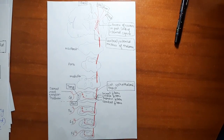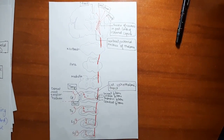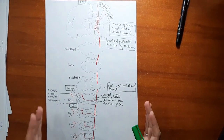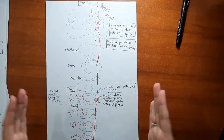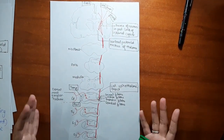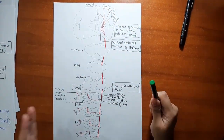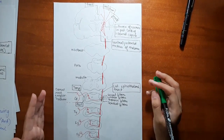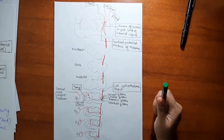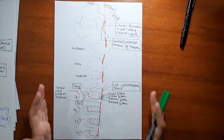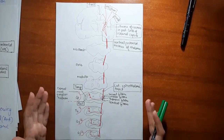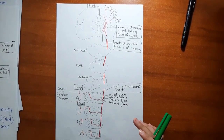The pain fibers, being lateral, become very superficial in the cervical region, so cordotomy can be performed safely to relieve pain in the opposite half of the body. In syringomyelia, a fluid-filled cavity forms in the spinal cord, and involvement of the decussating fibers leads to bilateral loss of pain and temperature below the level of lesion.